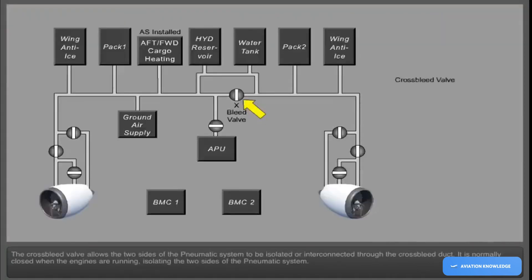The cross bleed valve allows the two sides of the pneumatic system to be isolated or interconnected through the cross bleed duct. It is normally closed when the engines are running, isolating the two sides of the pneumatic system.